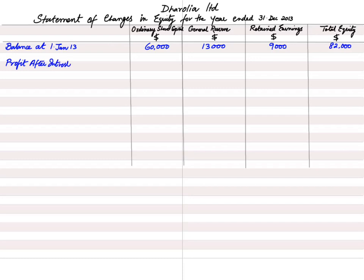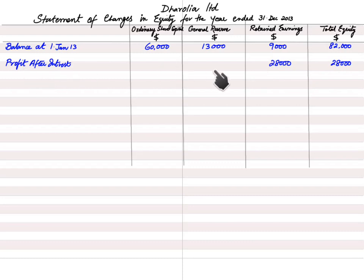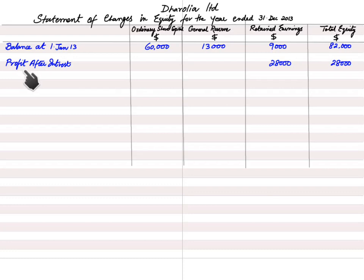The profit for the year of $28,000 is added to the retained earnings column. Whenever the company earns profit, it is credited to retained earnings. If there is a loss, it is deducted from retained earnings. Profit and loss always go into retained earnings, not any other column. If the profit given is before interest, you must deduct interest first in a separate working, as interest is part of the income statement, not the statement of changes in equity.